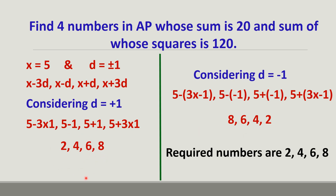Hence, the required four numbers in AP whose sum is 20 and sum of squares is 120 are 2, 4, 6, 8. Now that we have solved some problems in arithmetic progression, let us end this video here. We can solve other problems in another video. Thank you for watching. For more videos, subscribe to the channel.